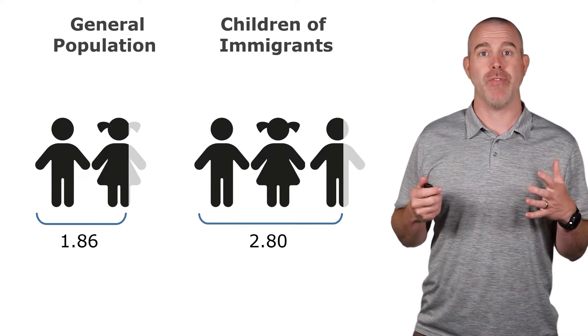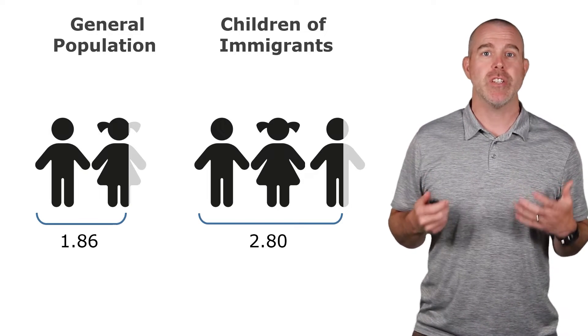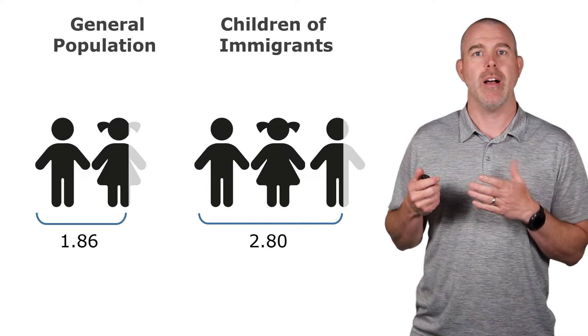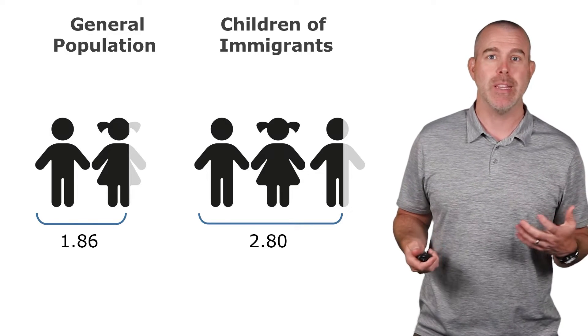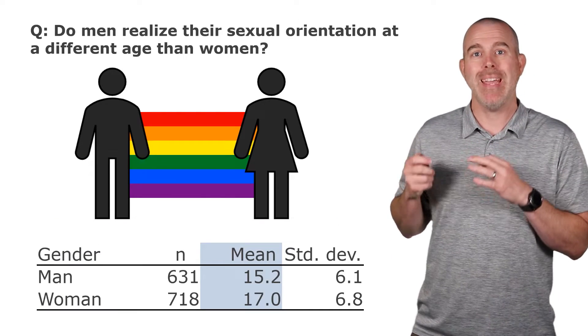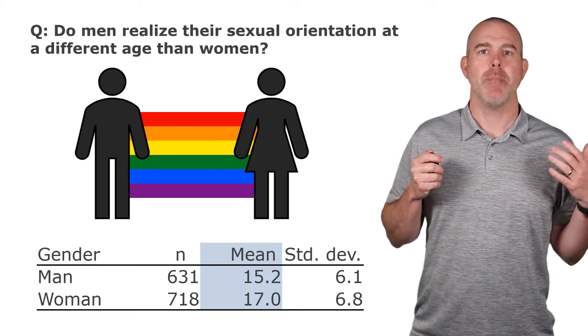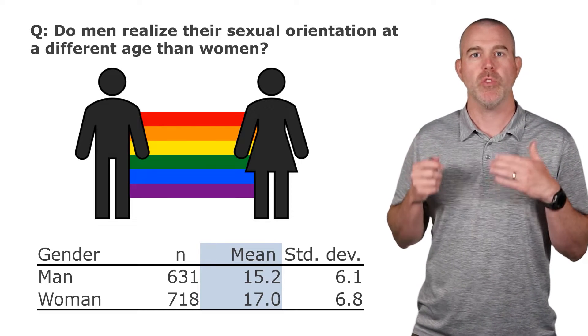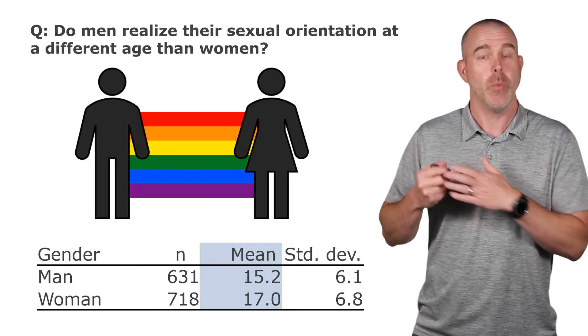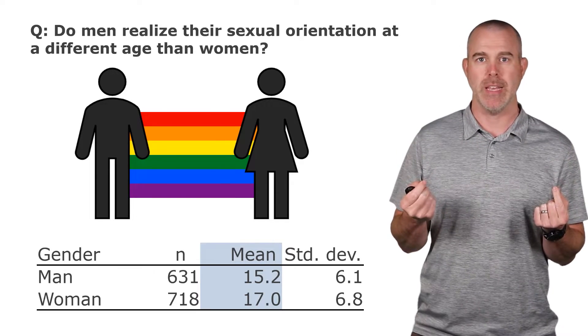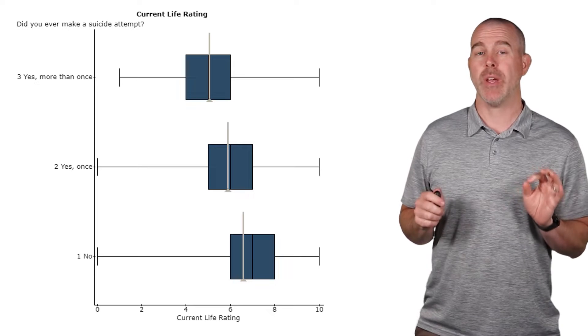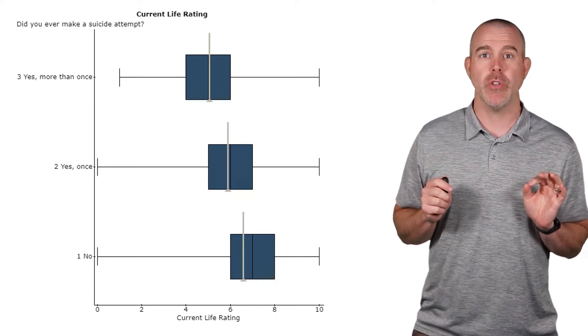Now, we've looked at means before. We looked at the average number of children in the family for children of immigrants and compared that to the general population. We also compared the mean age that lesbian, gay, bisexual individuals realized their orientation, comparing men versus women. So we compared two populations. What we're going to do now is compare more than two means.